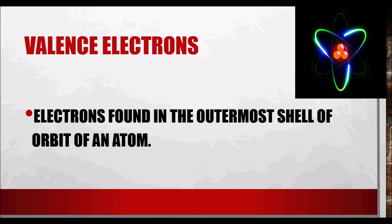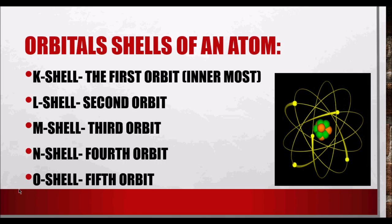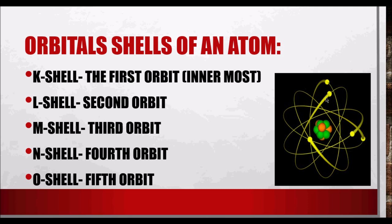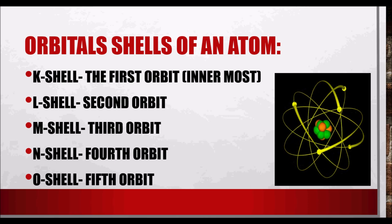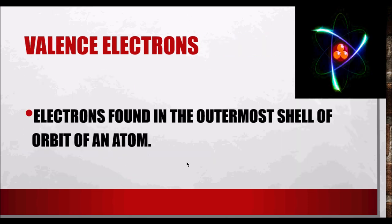Valence electrons are electrons found in the outermost shell or orbit of an atom. If there are five orbits, the valence electrons are in the O-shell. When valence electrons travel from one atom to another atom, there is a flow of electrons. The definition of flow of electrons is current. When there is current, there is electricity. This is focused on electricity because when an electron is in the outermost shell, only a small amount of energy is needed to transfer that valence electron to another atom.